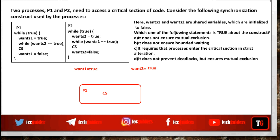It ensures mutual exclusion. What about bounded wait? Suppose P1 exited from the critical section and sets once1 equals false. If P1 again wishes to enter the critical section, since the other flag is true, P1 will not be allowed to enter. Once a process makes a request to enter the critical section, it doesn't happen that the other process is given the chance again and again. So there is bounded waiting. The second statement is also false.